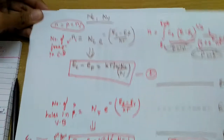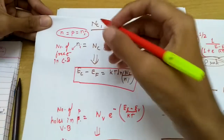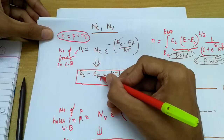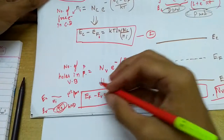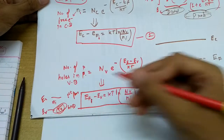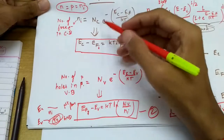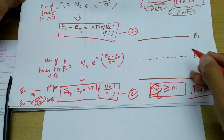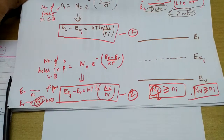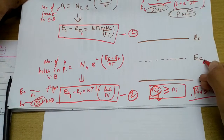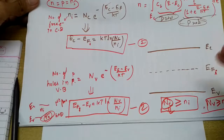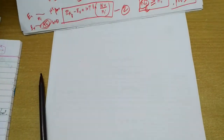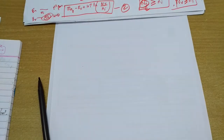Since we are discussing intrinsic semiconductors, let me explicitly write efi — the Fermi level of an intrinsic semiconductor. This notation helps avoid confusion when we later move towards extrinsic semiconductors.